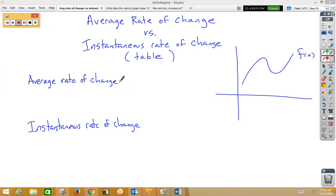Average rate of change is slope at two points, which is simply our slope formula from algebra 1, y2 minus y1 over x2 minus x1.